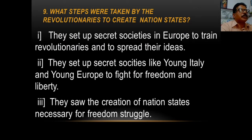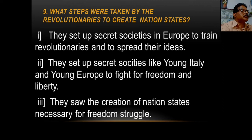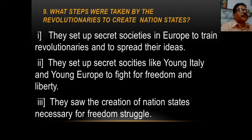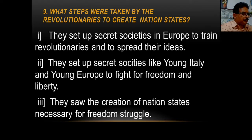What steps were taken by the revolutionaries to create nation states? The revolutionaries set up secret societies in Europe to train revolutionaries and to spread their ideas of liberty and nation states. They set up secret societies like Young Italy and Young Europe to fight for freedom and liberty. They saw the creation of nation states as necessary for the freedom struggle.